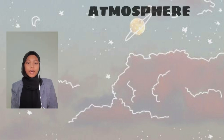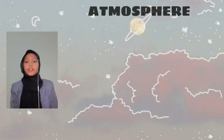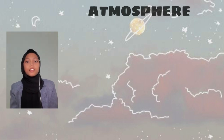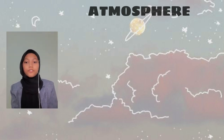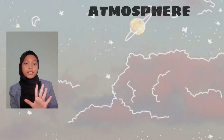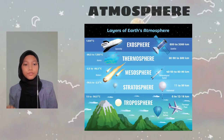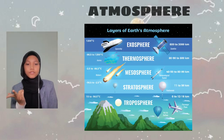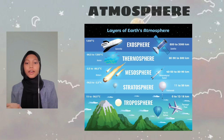Next, we have the atmosphere, which is the layers of gases covering the earth's surface. The earth's atmosphere consists of five layers: the troposphere, stratosphere, mesosphere, thermosphere and exosphere.